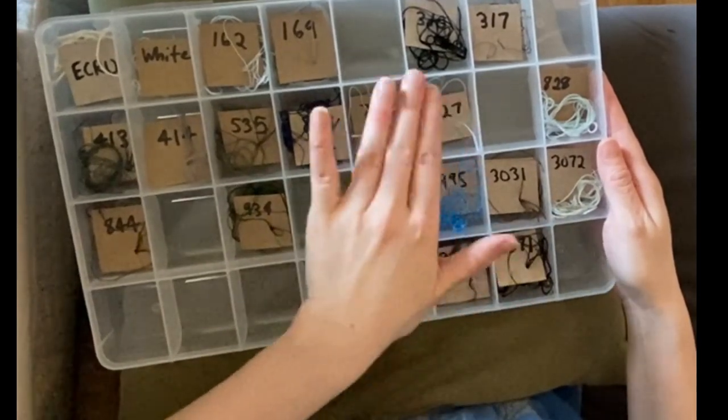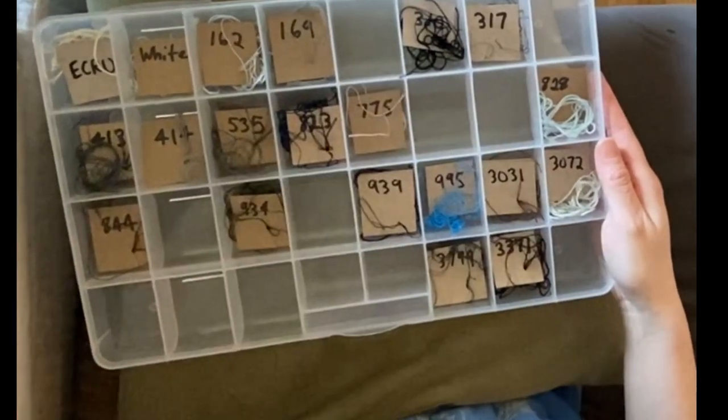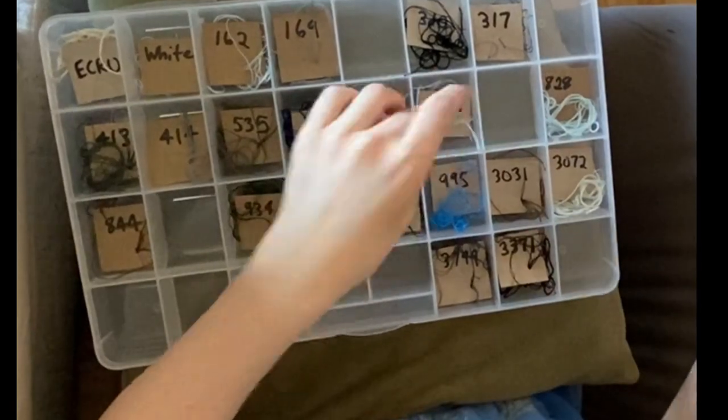And then of course once I move to a new section, if a color is no longer going to be used a lot in that section, then I just pick all of this up, put it back in the envelope, put it back in my tub, and replace it with a new color that I'm going to be using a lot in that area.